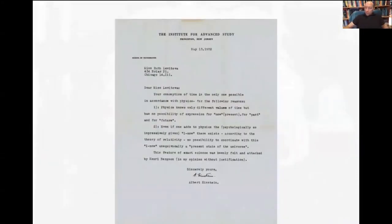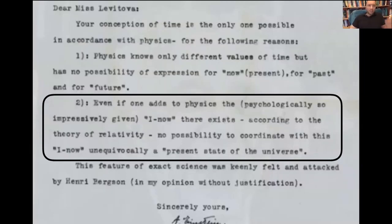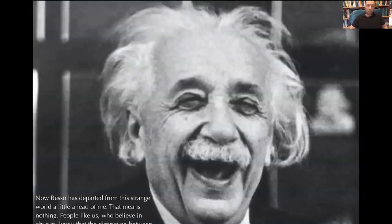So one of the first people that took seriously this idea that there is no change in the world and no role for the notion of a now was Einstein. So here in this letter, he wrote back to a Miss Levitova, who was writing to him about the block universe. He says that your conception of time is the only one possible in accordance with physics for the following reasons. Physics knows only the different values of time, but has no possibility of expression for now, present, for past and for future. Even if one adds to physics the psychologically so impressively given I now, there exists, according to the theory of relativity, no possibility to coordinate with this I now unequivocally a present state of the universe.